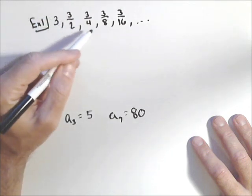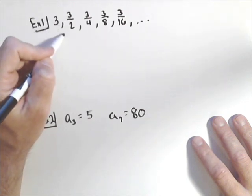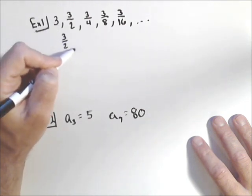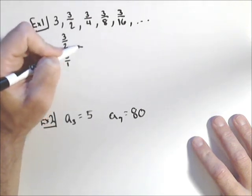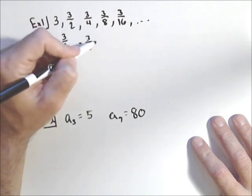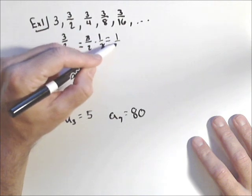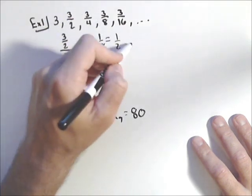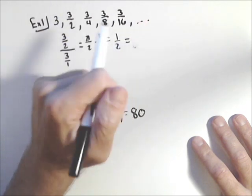Here we can see that we're multiplying by one half each time. But what we'd do if we weren't sure, we'd take three halves and divide it by three. Which is, remember, that's the same thing as three halves times one third, cancels to one half. And we can keep going. We have a common ratio of one half.